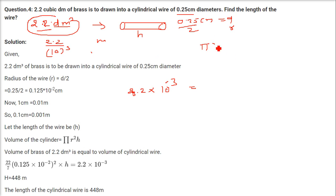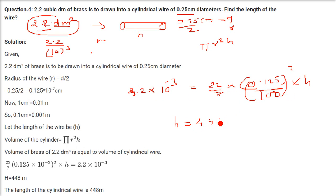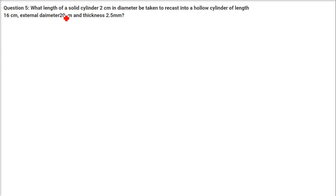Set volume of block equal to volume of cylinder: 2.2 × 10⁻³ = π × (0.00125)² × h. Solving for height h gives 448 meters. This is the answer — equate the volume of the brass to π r² h of the wire.